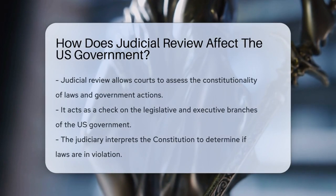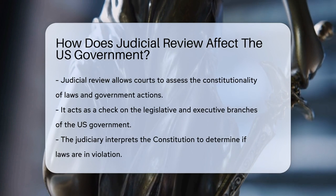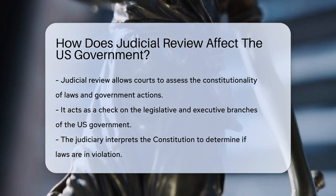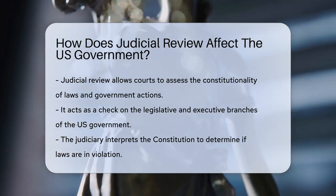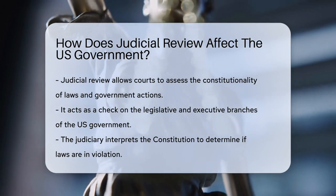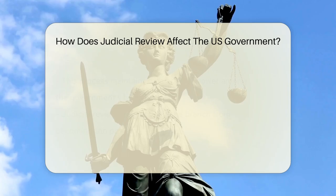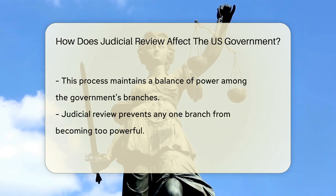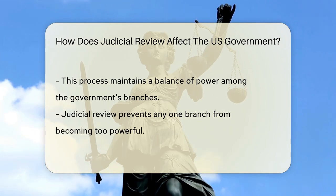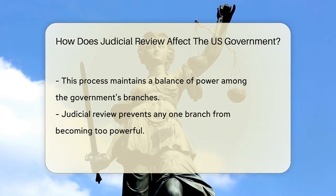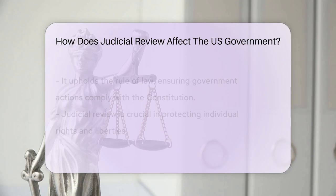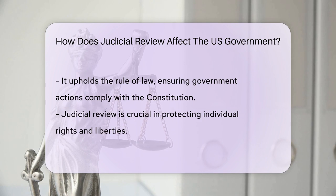Judicial review allows courts to review the constitutionality of laws and government actions. This power ensures that laws align with the Constitution, acting as a check on the legislative and executive branches. Through judicial review, the judiciary interprets the Constitution and determines if laws violate it. This process helps maintain the balance of power among the branches of government, preventing any one branch from becoming too powerful.